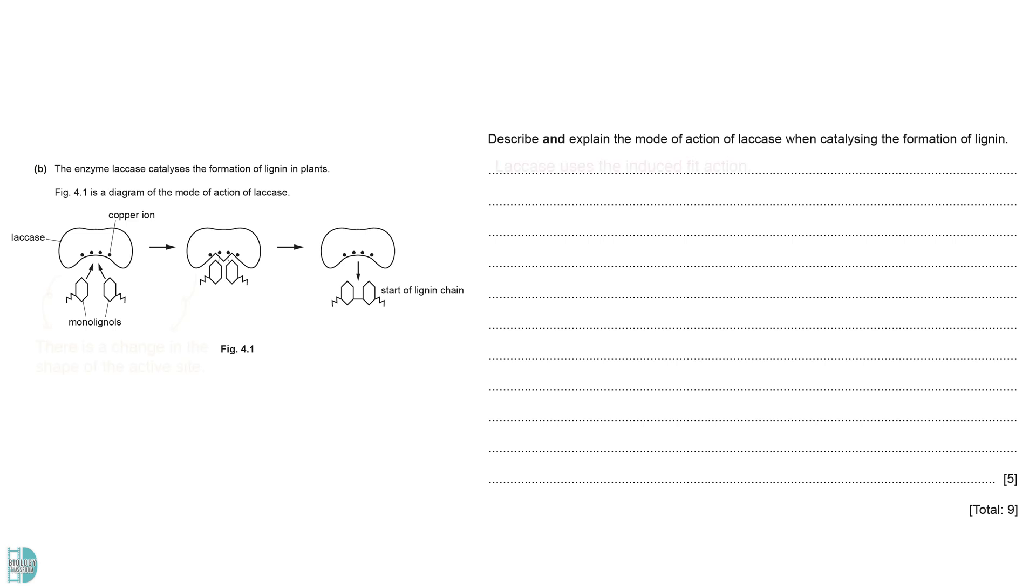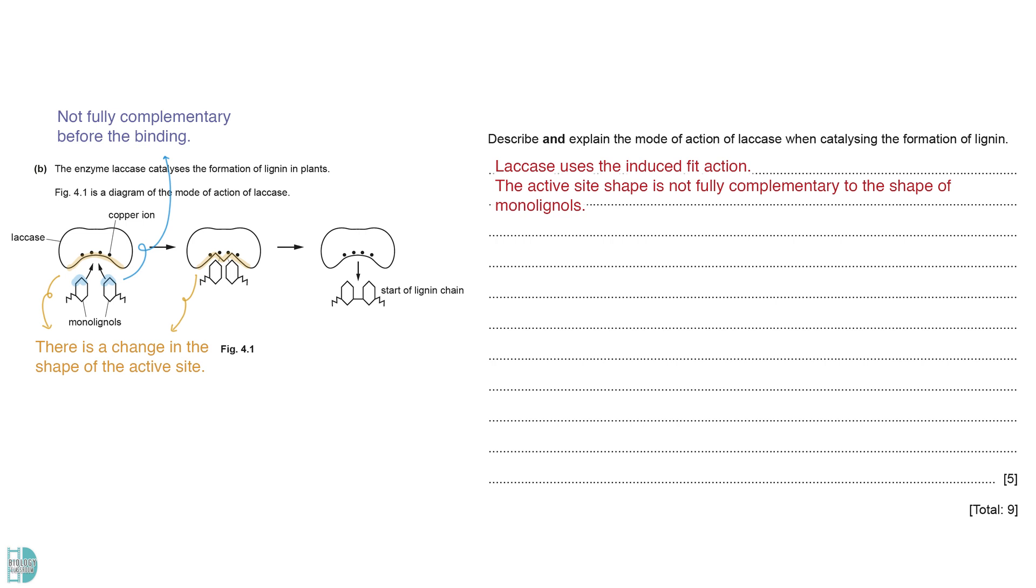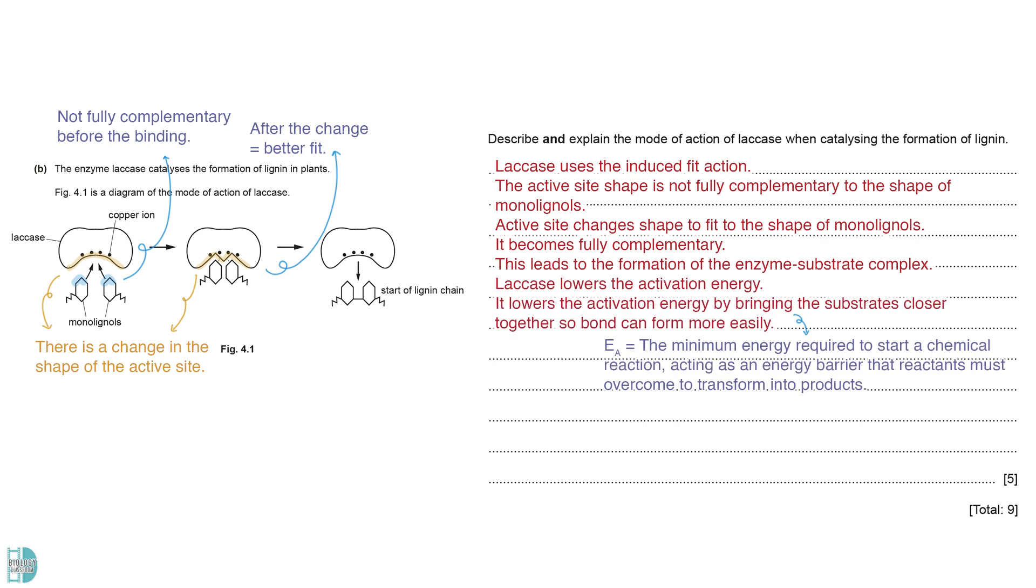B shows the formation of lignin. The figure shows a change in the shape of the active site. This is the induced fit action. The active site shape is not fully complementary to the substrate shape before binding. The substrate induces the active site and alters its shape to better fit with it. The interaction causes it to become fully complementary, leading to the formation of an enzyme substrate complex. Laccase lowers the activation energy. It is the minimum energy required to start a chemical reaction, acting as an energy barrier that reactants must overcome to transform into products. The diagram shows that the enzyme lowers the activation energy by bringing the substrate closer together, allowing the bonds to form more easily. If the activation energy is not reduced, substances require a greater amount of kinetic energy to collide and form a bond. After that, laccase returns to its original shape. The product leaves the active site. The enzyme is ready to catalyze another reaction.